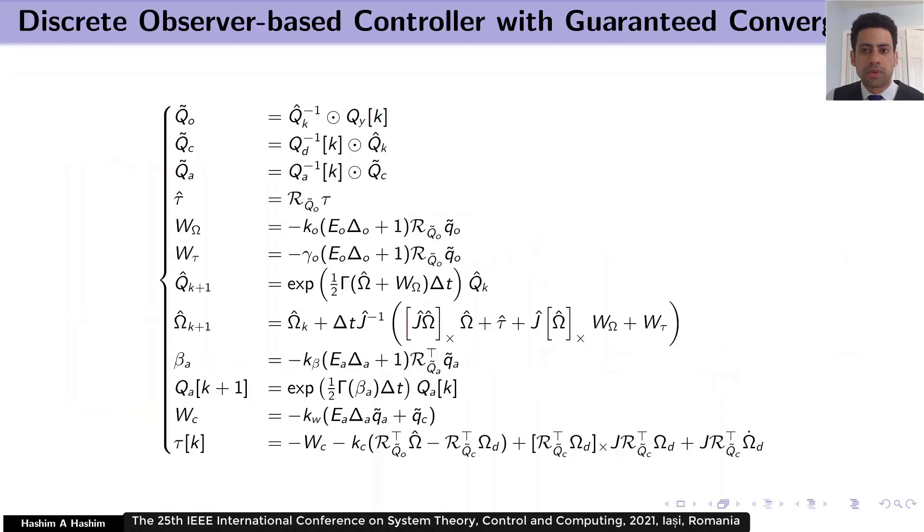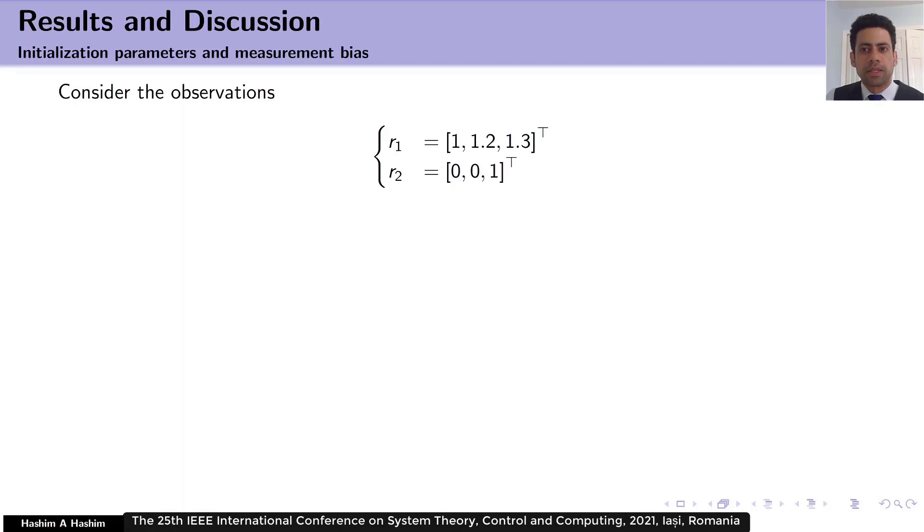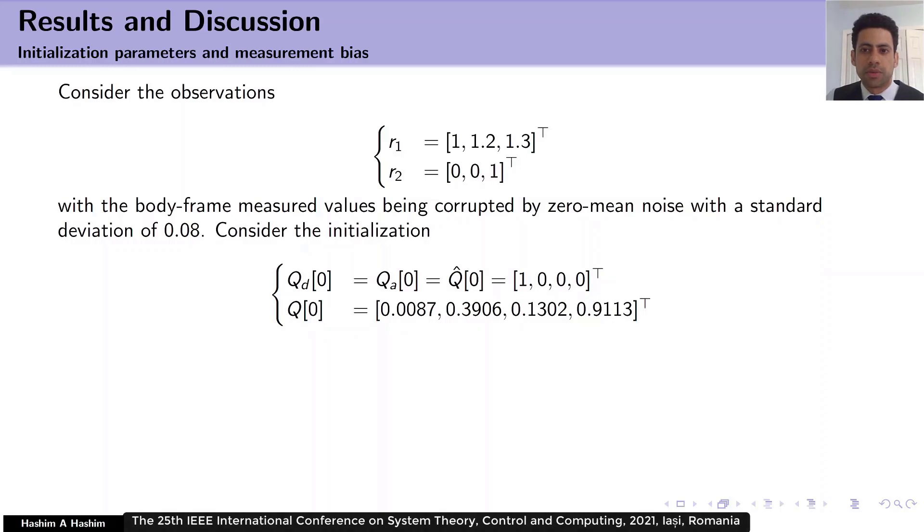Although the observer-based controller is proposed in continuous form, this slide shows the same observer-based controller in its discrete form. Alright, now it's time to look at the numerical results. Let's consider the following observations. The body frame measured values are assumed to be corrupted by zero mean noise with standard deviation of 0.08. The initialization parameters were set, as shown here.